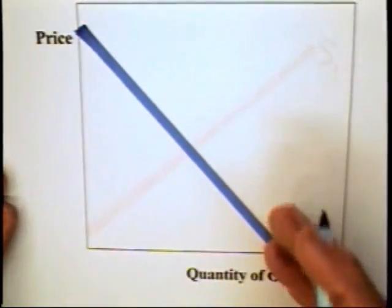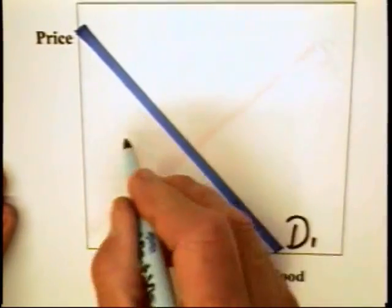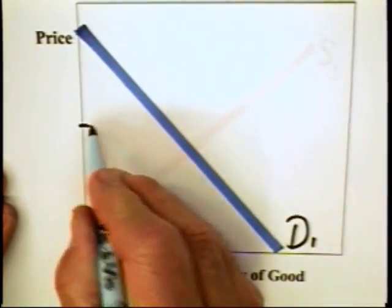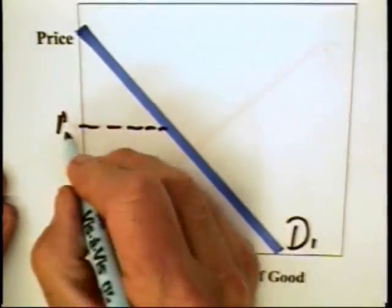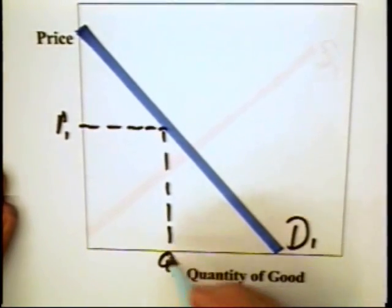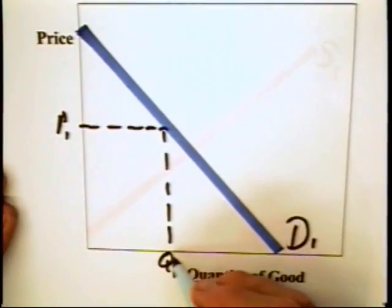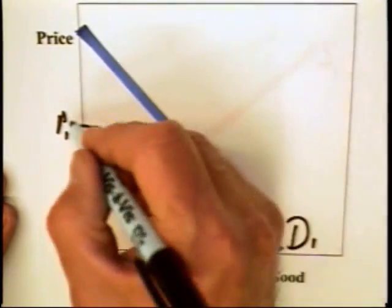That is, think about this curve as a razor edge. Any point up to that razor's edge is acceptable to consumers. For example, consumers are willing to pay as much as P1 for quantity Q1. That is, at the limit, they are willing to pay for Q1 a price of as much as P1.